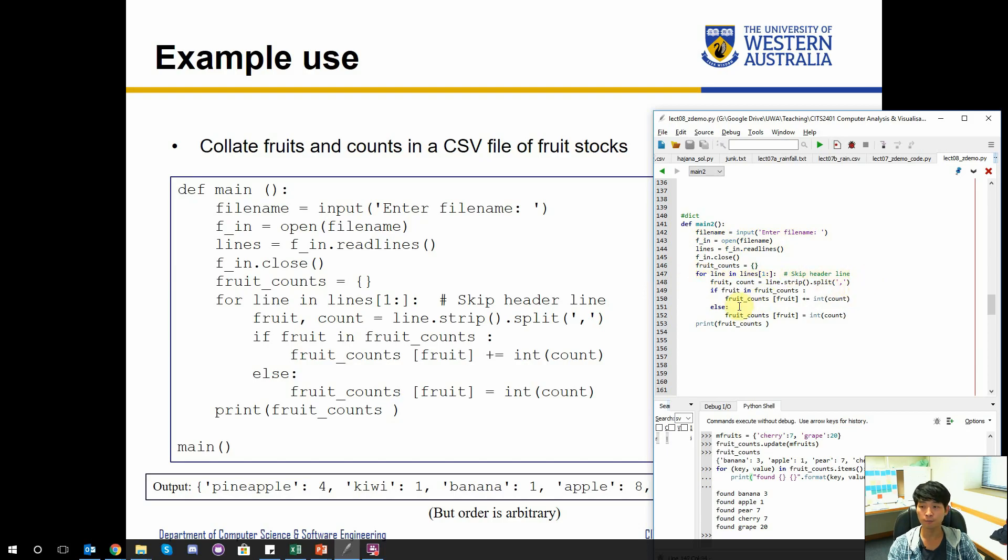And for each line, what we're going to do is: if fruit in fruit counts, so that means if we already created a fruit count inside our dictionary, then we're just going to append by plus equals and then convert this into an int. Otherwise, we're going to create a new entry because we haven't seen this fruit before, and then print this out.